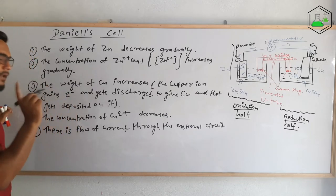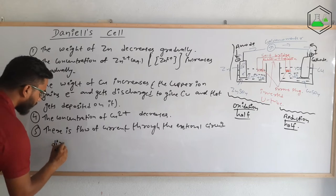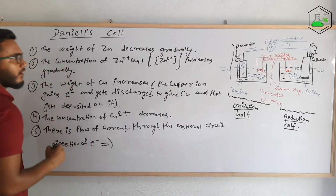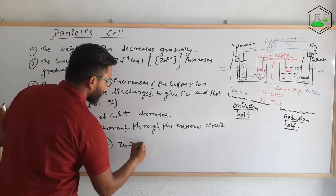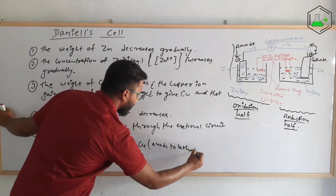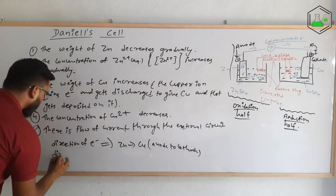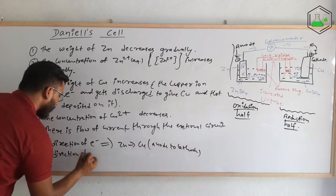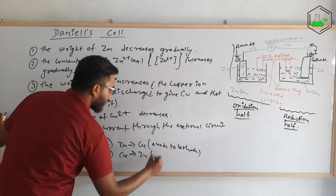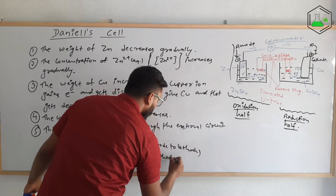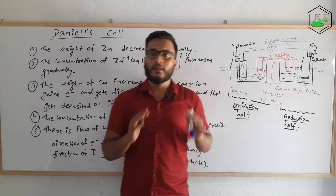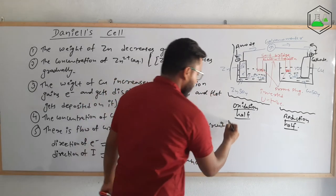One thing should be noted: the direction of electron flow is from zinc to copper, that is from anode to cathode. The direction of conventional current, however, is from copper to zinc, that is from cathode to anode. So these are the five observations we make in Daniel's cell.